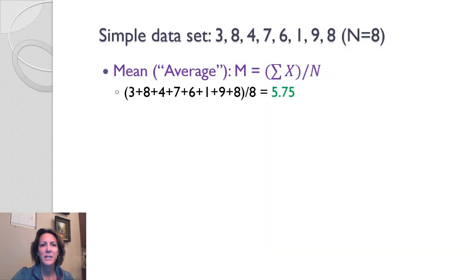So here's a simple data set: 3, 8, 4, 7, 6, and so on. I'm not going to read them all. There are a total number of 8 in the data set. So to find the average, we simply add up all the numbers and divide by 8 to get 5.75. Makes sense, right?